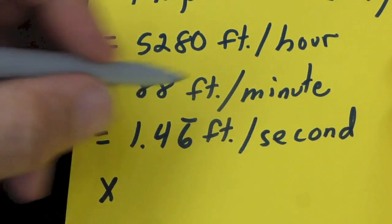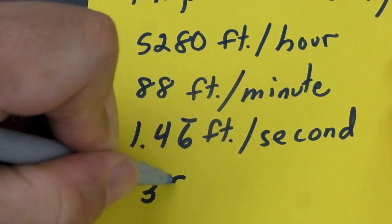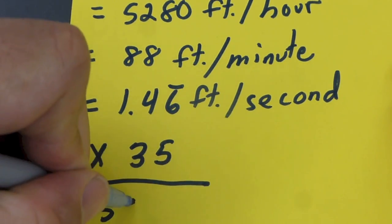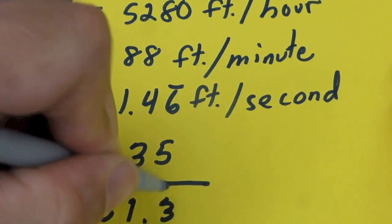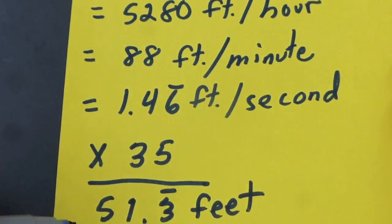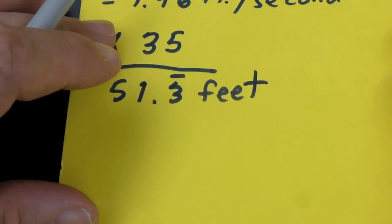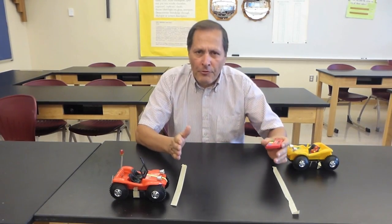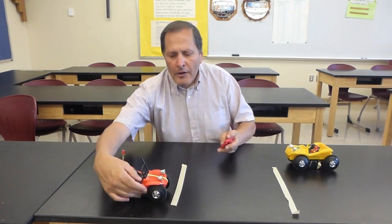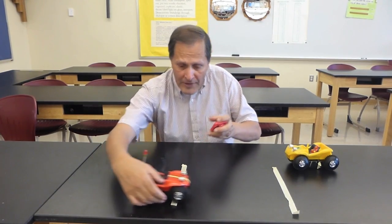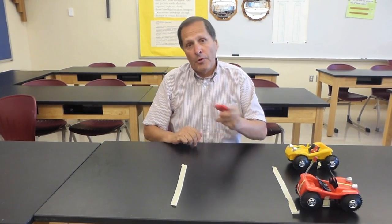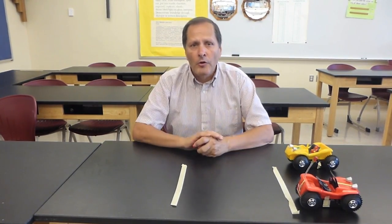Now when we multiply this by 35 miles an hour, that would give us a distance of 51.3 feet. Now if I were to use 51.3 feet as our reference lines, it would take one second for the car to get from one side to the other at 35 miles an hour.